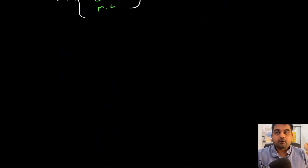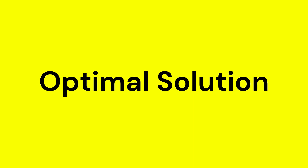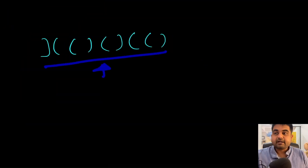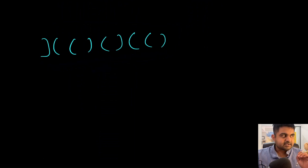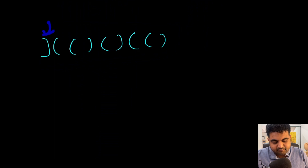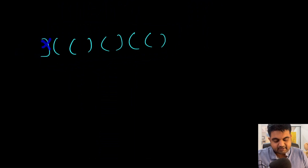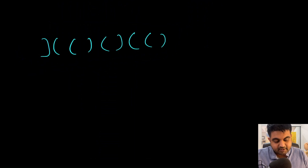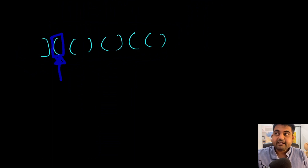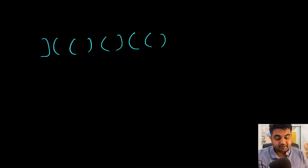Now let's start looking at what an optimal solution should look like. Suppose this is the input string and we are trying to find the solution. The first key observation is: the moment we identify a closing bracket and we haven't found an opening bracket before it, we can directly ignore this case because it is definitely invalid. The second observation is: for any opening bracket, we need to keep that information stored somewhere, as we need to find a subsequent closing bracket for it.